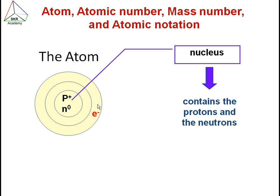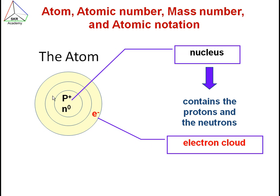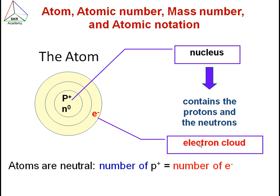Electrons are around the nucleus – they rotate around the nucleus and they form an electron cloud. So in an atom, usually the number of protons remains equal to the number of electrons, and that is why the atom becomes neutral – it doesn't have any charge.